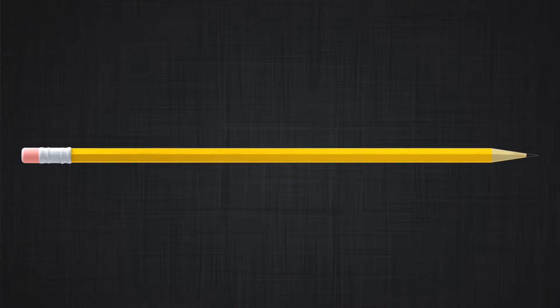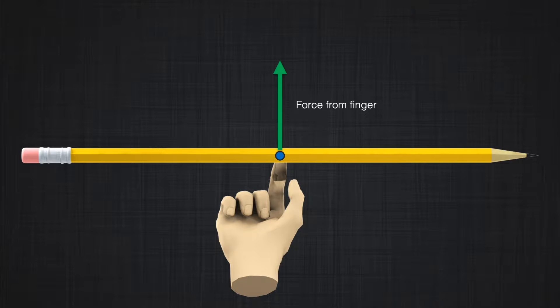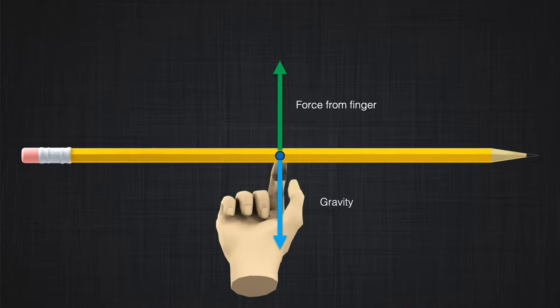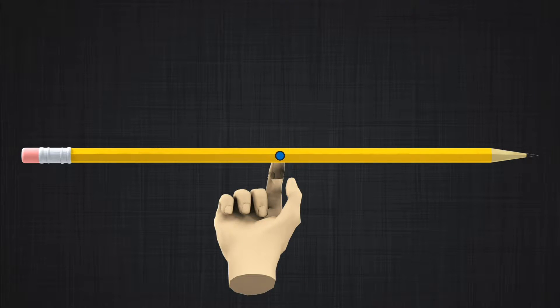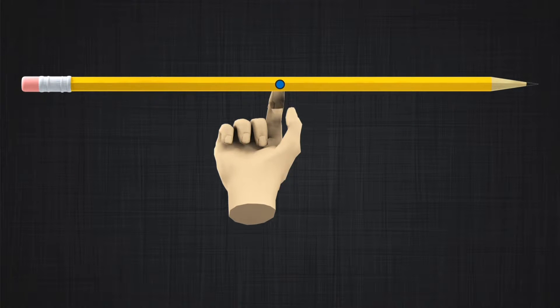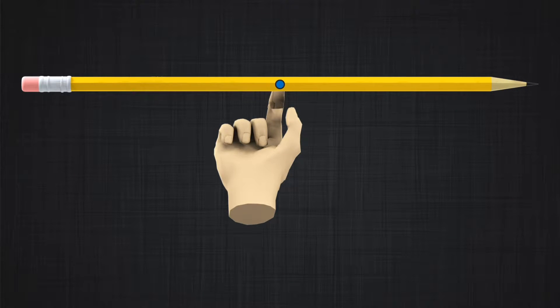For example, when looking at a pencil — if you put your finger in the middle of the pencil, the pencil will balance around your finger. You can even move the pencil up with your finger without letting it fall down. So your force passes through the center of gravity and causes the movement of the pencil to be predictable.